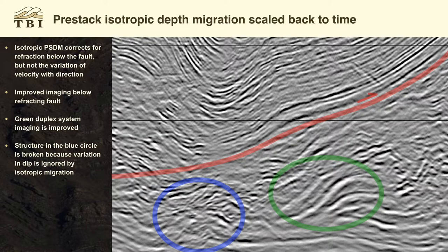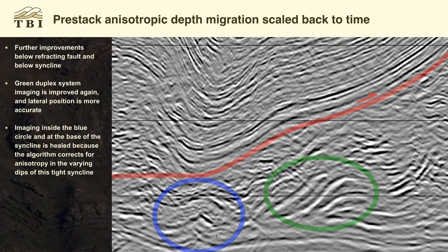We don't have the luxury of averaging through these effects with depth migration — that was part of the problem with depth migration in the early days before we corrected for anisotropy. Once we started correcting for anisotropy, we could heal up the base of the syncline. The structure in blue is also healed when we correct for ray bending, and there's a significant improvement in sharpening up the edges and bringing out the coherency of the duplex system.